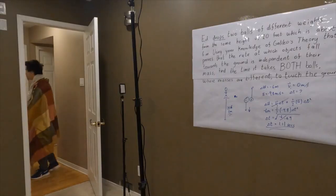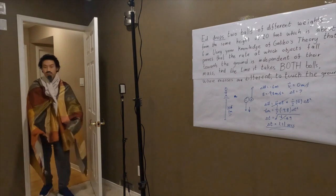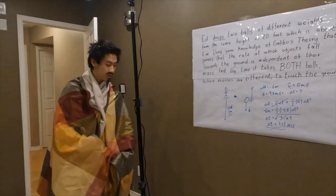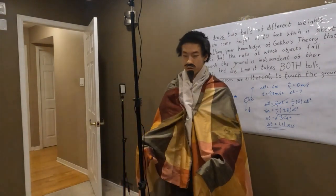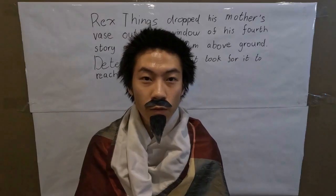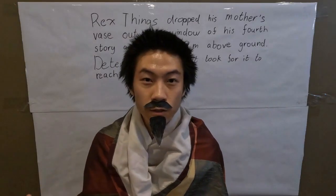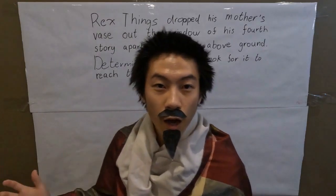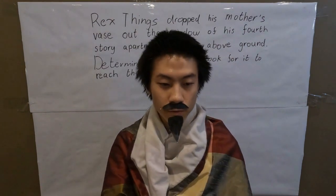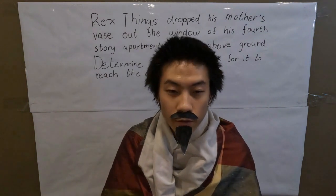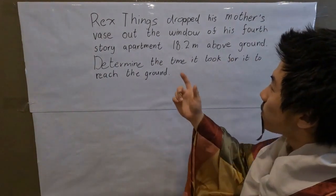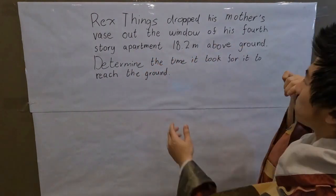Wow, yeah, here we are. People in the future, they're so rich. Where do I stand? Stand over there. And look at the camera and don't forget to introduce yourself. Hello, everyone, my name is Vincenzo Viviani. I am from Italy, and today I'm helping my good friend, future friend, with a physics question. So the question is: Rex Things dropped his mother's vase out the window of his fourth story apartment.